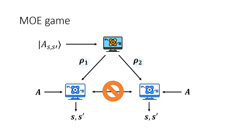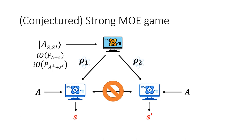Note that if the description is given to the very first algorithm, the game is easy — having both a coset state and the underlying subspace makes extracting S and S' trivial. Similarly, if the two algorithms in the second stage can communicate, the problem also becomes trivial. We further show that if IO of membership checking programs are given to the algorithms, the problem remains computationally hard. We similarly define the strong monogamy of entanglement game, where the algorithms in the second stage need to output S and S' respectively, instead of both outputting S and S' simultaneously. Culf and Vidick later proved that coset states satisfy this property, so we can remove the conjecture from our work.